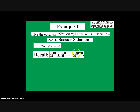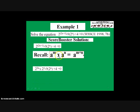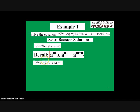In the present case, a equals 2, m equals 2x, and n equals 1. So we are going to put it in the expanded form, and we have 2 raised to power 2x times 2 raised to power 1. Every other thing remains the same.